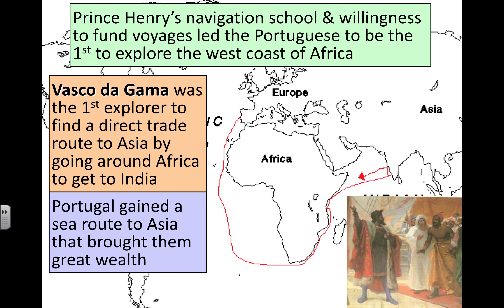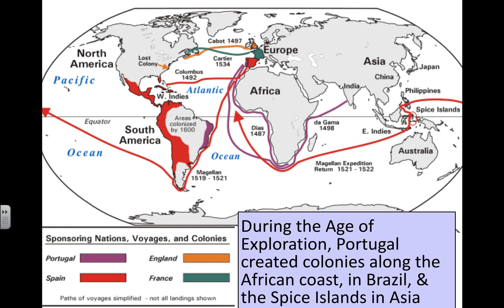Another Portuguese explorer, Vasco da Gama, was the first explorer to find the direct trade route to Asia by going around Africa to get to India — sailing all the way to the tip of Africa and around to India. This became a very well-used route by the Portuguese and fueled Portuguese prestige during the Age of Exploration. Portugal then created colonies — you can see the territories claimed by Portugal in purple on the map, including some in Brazil and the Spice Islands in Southeast Asia.